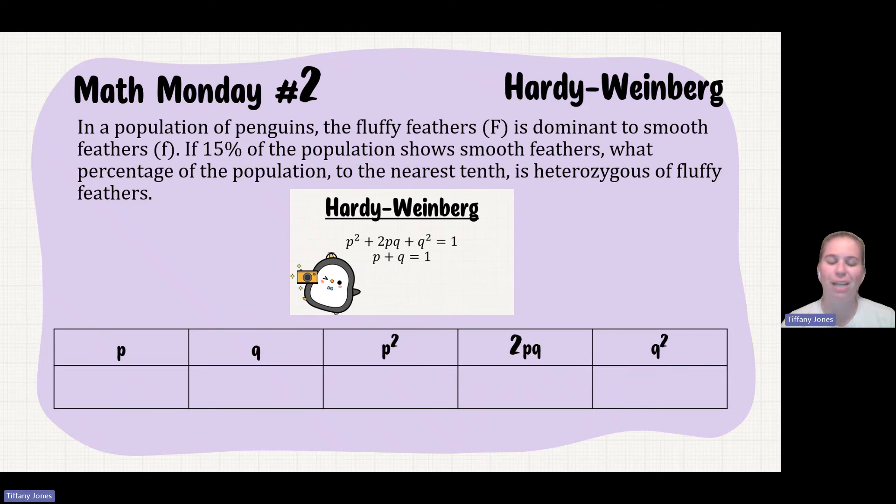So I always use this little chart to help my students out. And so what have I been given? I've been given that 15% are going to show smooth feathers. And whenever you're solving these problems, you always start with Q², which thankfully the question gives that to me. So 15% are going to be Q². So if I make that a decimal, that's going to be 0.15.